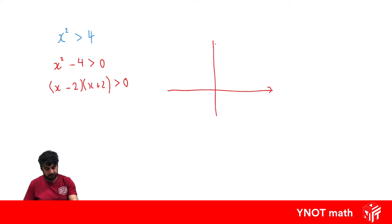We know the intercepts are going to be minus 2 and 2. We're going to have a y-intercept of negative 4, and it's concave up because x squared is positive. So we're going to get something like that.